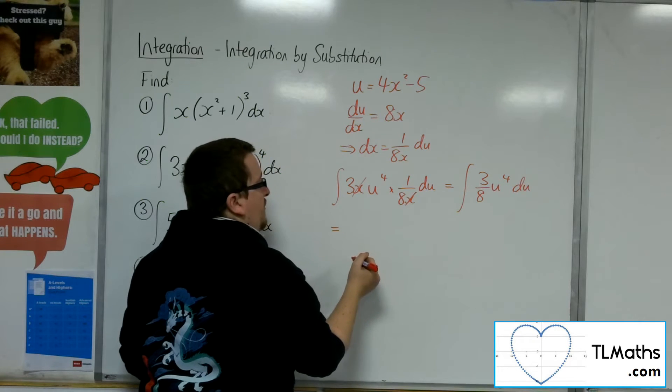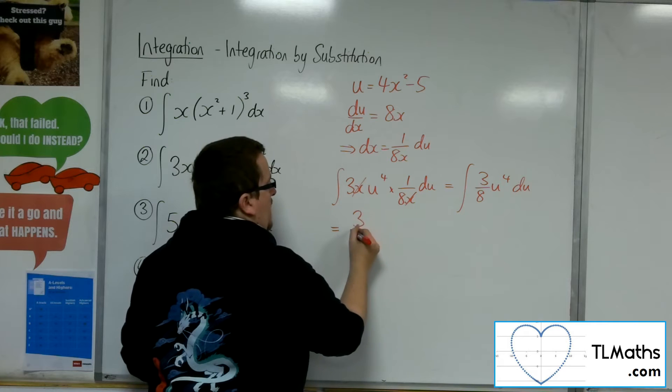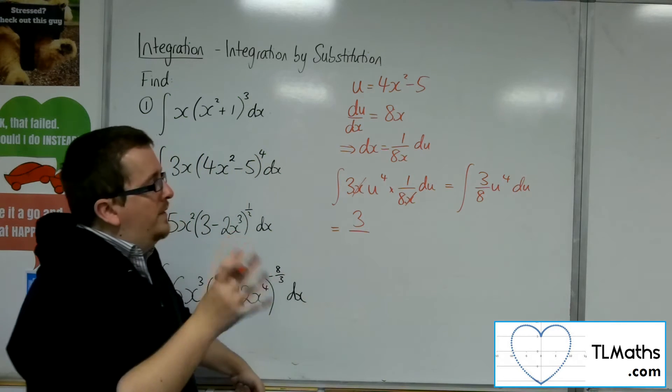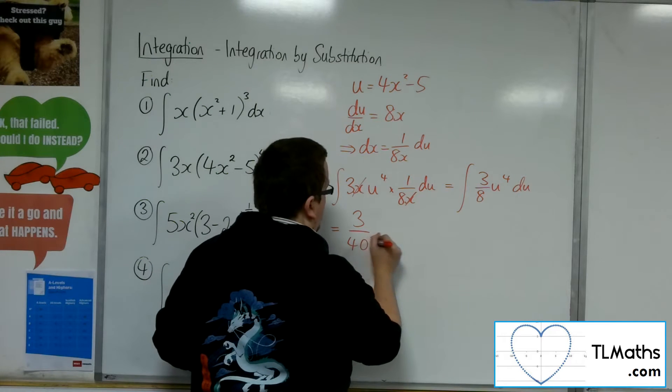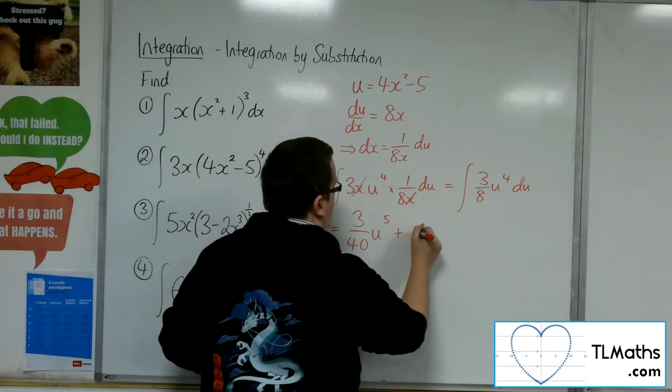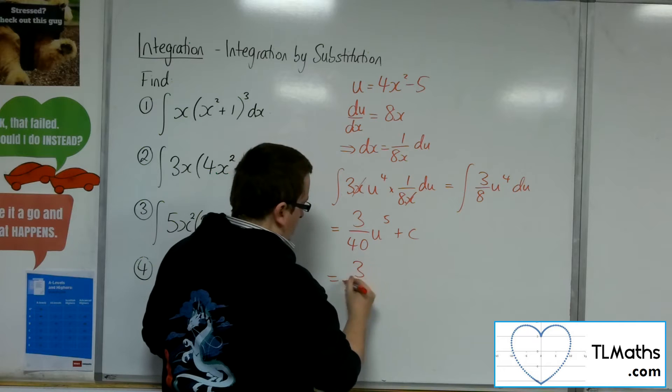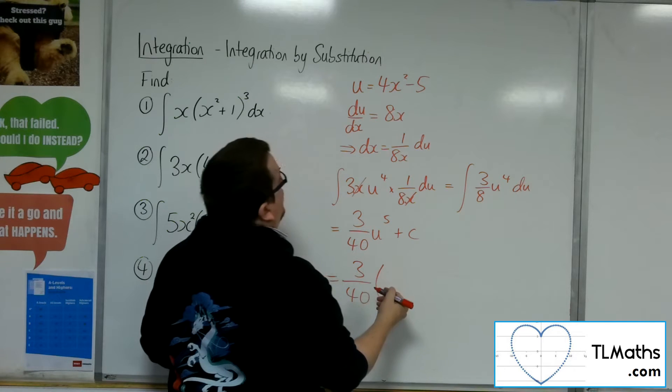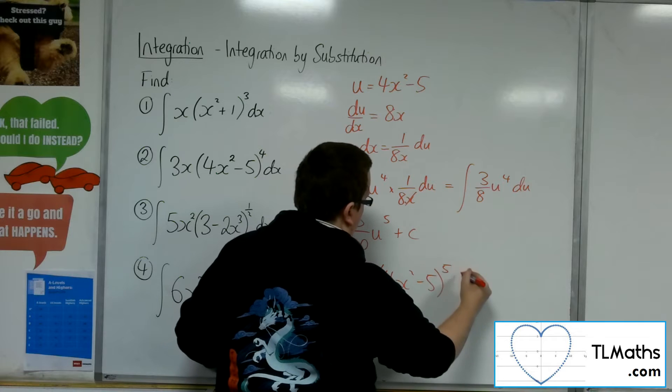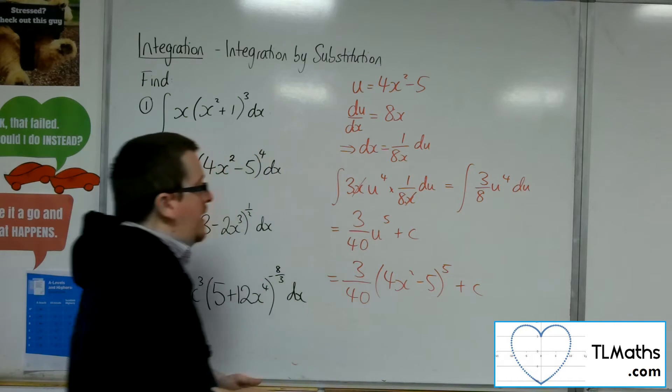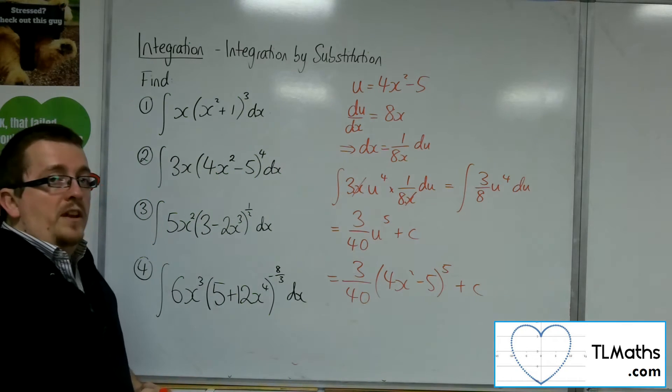We're going to add 1 to the power, divide by the new power. So we'll have 3 over, adding 5 get to 5, divide by 5. 8 times 5 is 40. So 3 40ths u to the 5 plus c. And then put the u back in. So 4x squared minus 5 to the 5 plus c. That would be the answer to number 2.